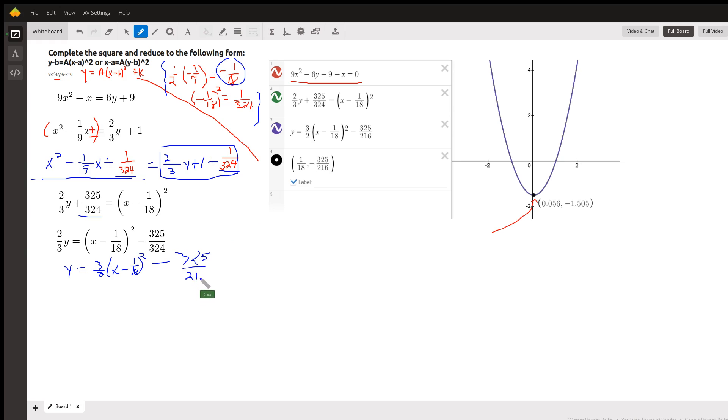Okay, so that's the equation of the parabola written in vertex form. When written here, that's the vertex. In other words, h, this number has to be a minus sign, and then this is the x-coordinate of the vertex. So 1 18th minus 325 216ths. There's some decimal approximations for those values.